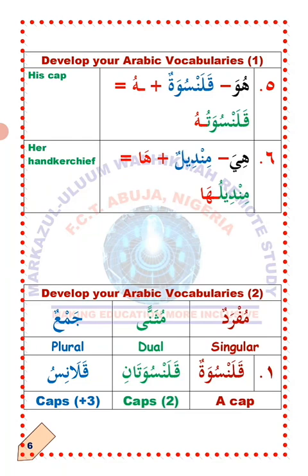Hamsa, number five — Huwa, he. So how do we change the word kolansuwa, a cup, to suit Huwa in order to indicate ownership? All you need to do is drop one of the two dhammas on the last letter — step one. Step two: you attach ha carrying dhamma to the last letter. Kolansuwa will now become kolansuwatuhu, which means 'his cup.' Seta, number six — Hea, she. How do we change mindilun to suit hea? Drop one dhamma, then attach ha to the last letter. Mindilun will now become mindiluha, which means 'her handkerchief.' La'allaka fahimt? I hope you understand. MashaAllah.